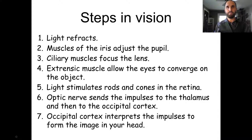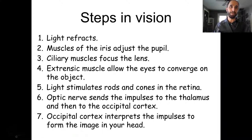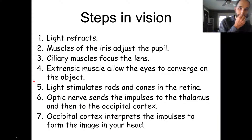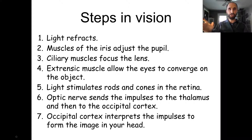The occipital cortex interprets vision by comparing what you see to your memories and experience of the world, allowing you to identify objects. A baby can't identify anything because they have no memories yet — they just look around trying to figure out what things are. The occipital cortex also forms mental images, so when you close your eyes and visualize something, the same part of the brain does that.